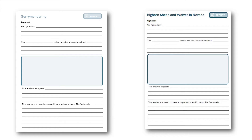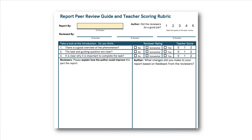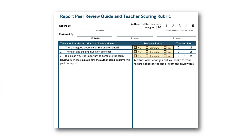Once students have completed this draft, they move into the peer review part of this stage. They do this using our peer review form. They write an ID number at the top and then hand it over to some reviewers who write their IDs as well. This way, it is a double-blind peer review. The reviewers read through each line of the rubric and rank each as being not met, somewhat met, or fully met. Then they write some feedback for the author on how they could improve that part of the report.